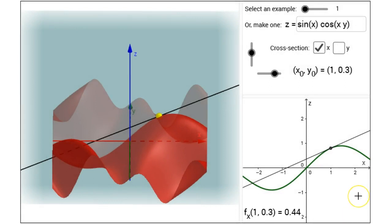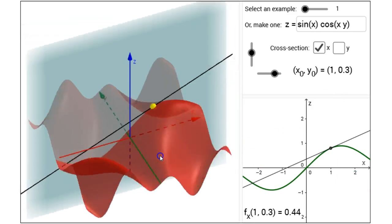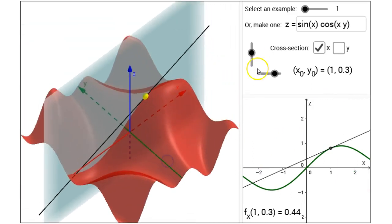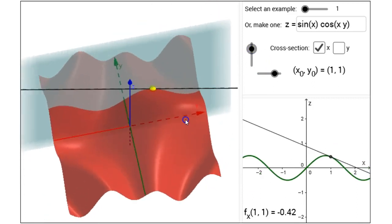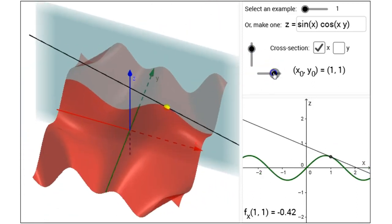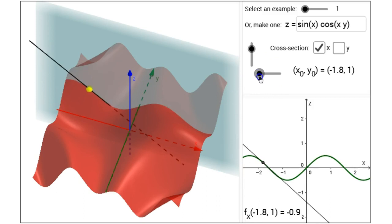Take care to notice the labels on the axes here. I have the x-axis and z-axis. Moving the point around will give me different cross-sections and different ideas of that derivative with respect to x.